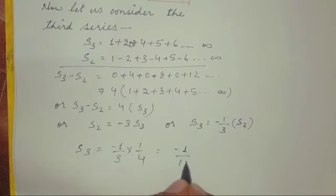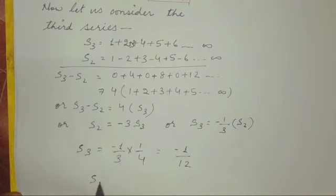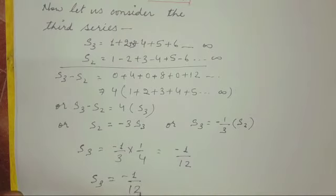This is what we had to prove: that S3, which is sum of all natural numbers from 1 plus 2 plus 3 plus 4 plus 5 till infinity, will give us negative 1 by 12.